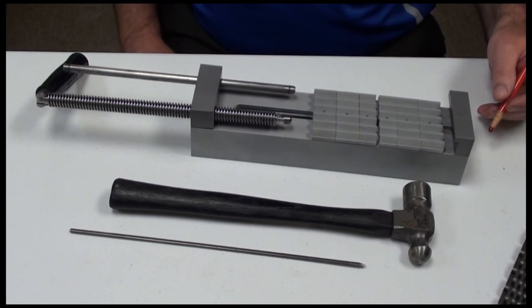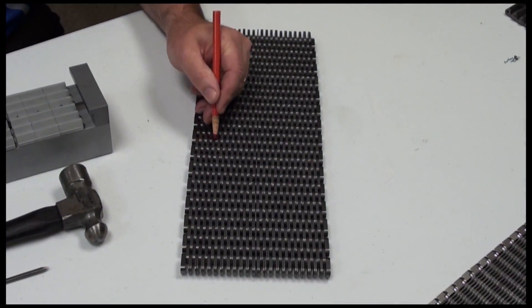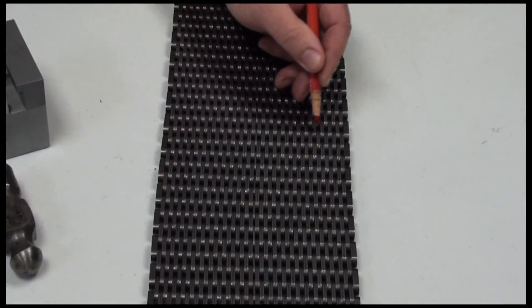The first step is to mark the chain joint where you wish to disconnect the chain.